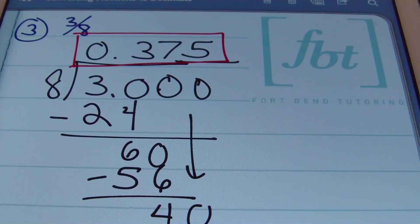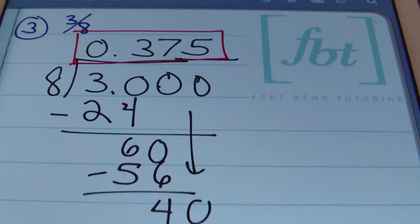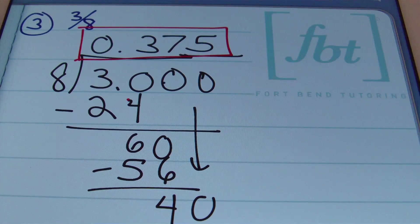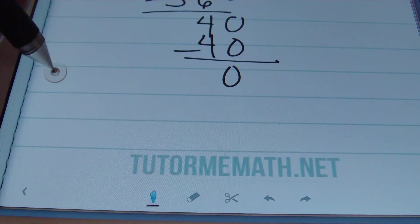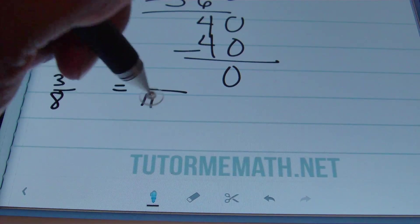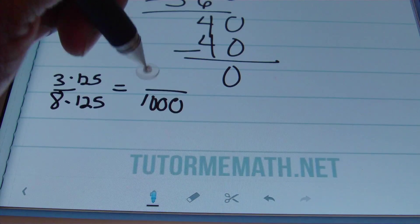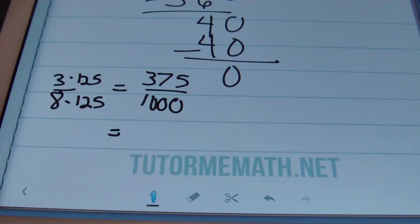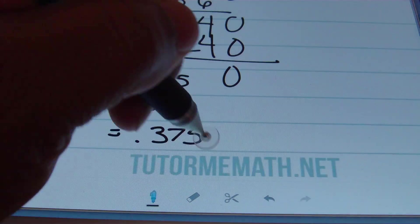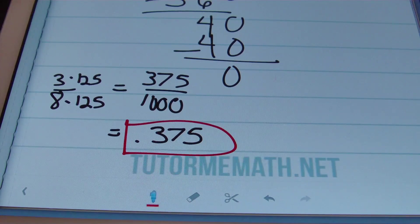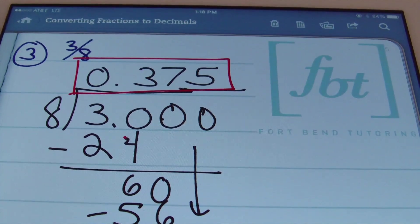You might wonder if there's a way to convert three-eighths without long division. Yes — using powers of ten! Since 8 times 125 equals 1000, multiply the numerator by 125: 3 times 125 is 375, giving 375 thousandths. The five must be three places from the decimal, so the answer is 0.375. You can use either method — powers of ten or long division — and get the result every time.